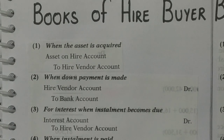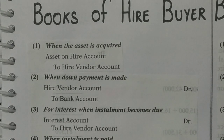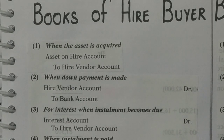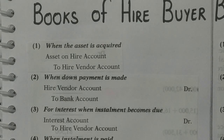The second entry is when the down payment is made — when the contract is signed and the first initial down payment is given. The entry will be hire vendor debited to bank account, because credit what goes out. We are paying cash to the bank, and debiting the hire vendor, which reduces the amount of the creditor.